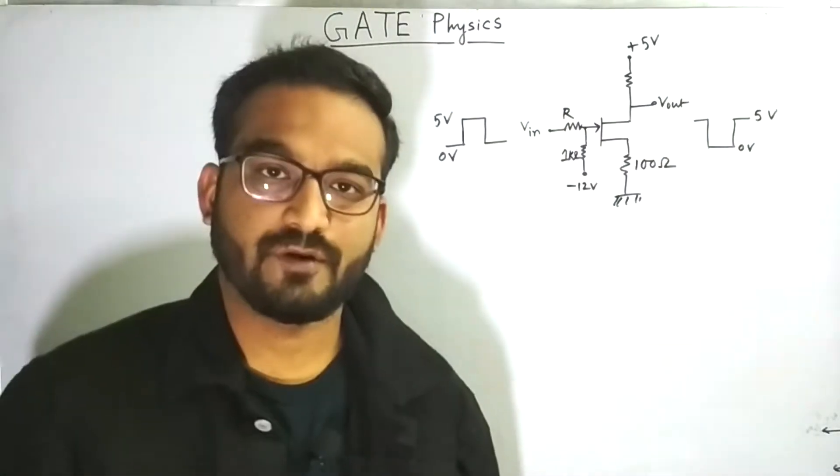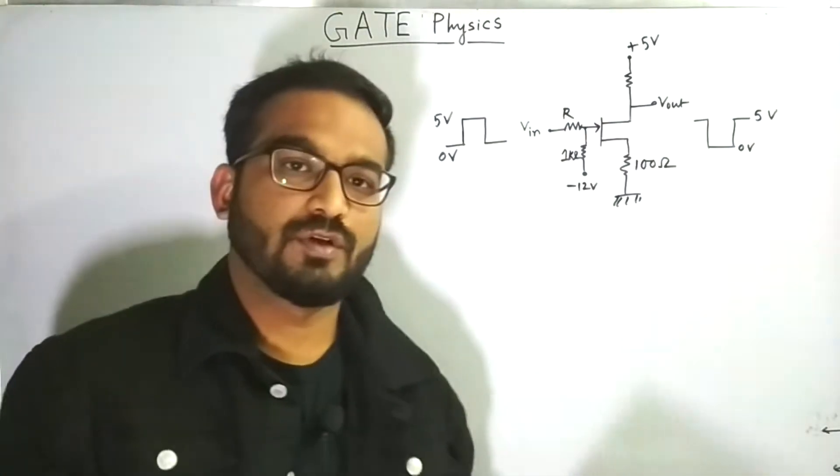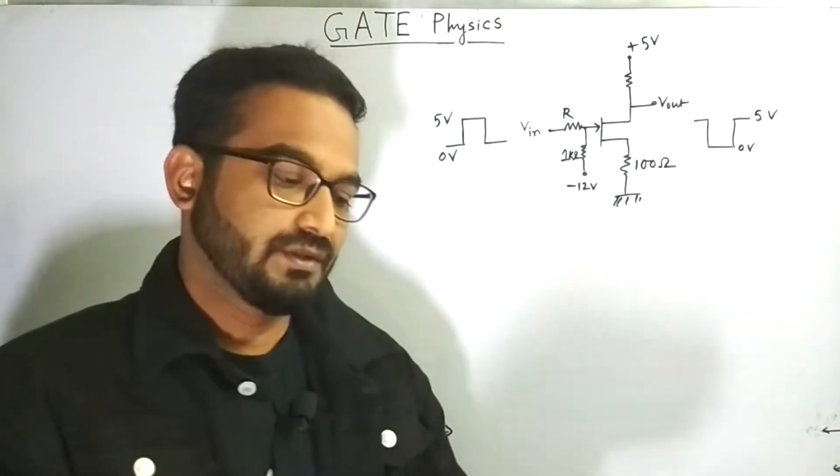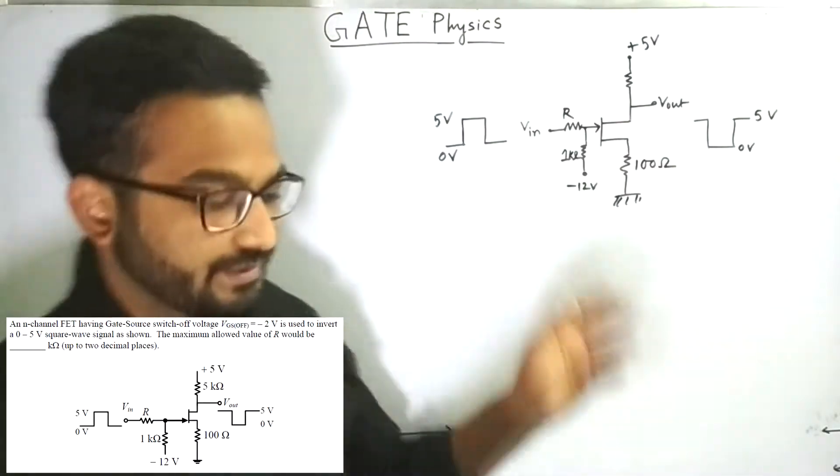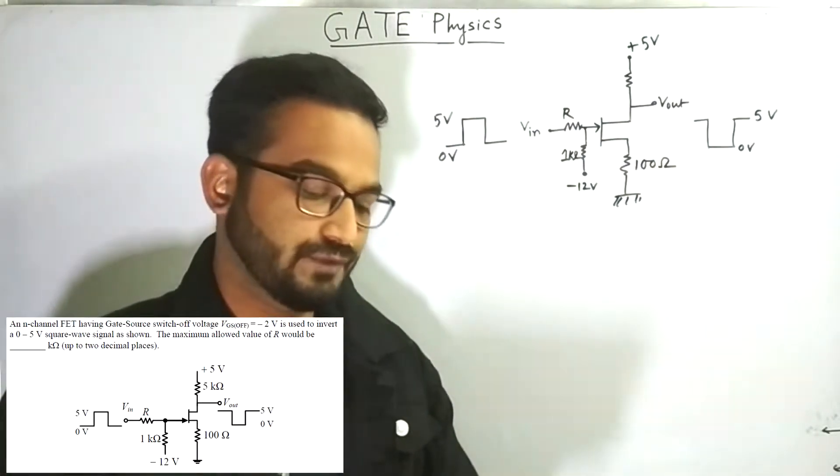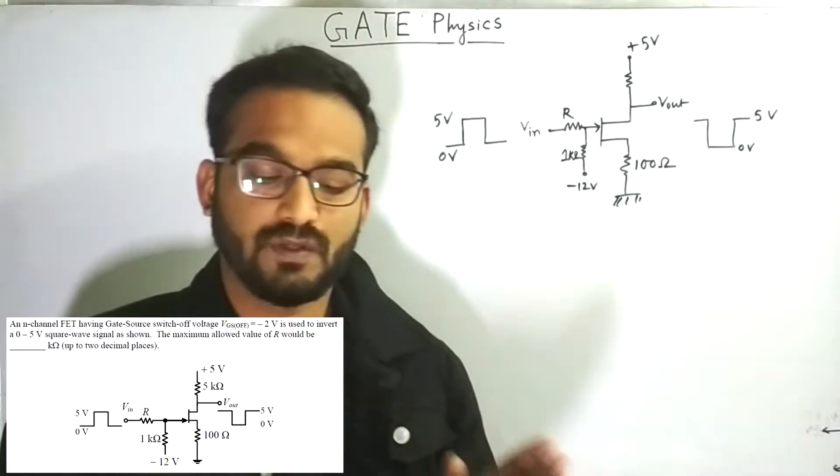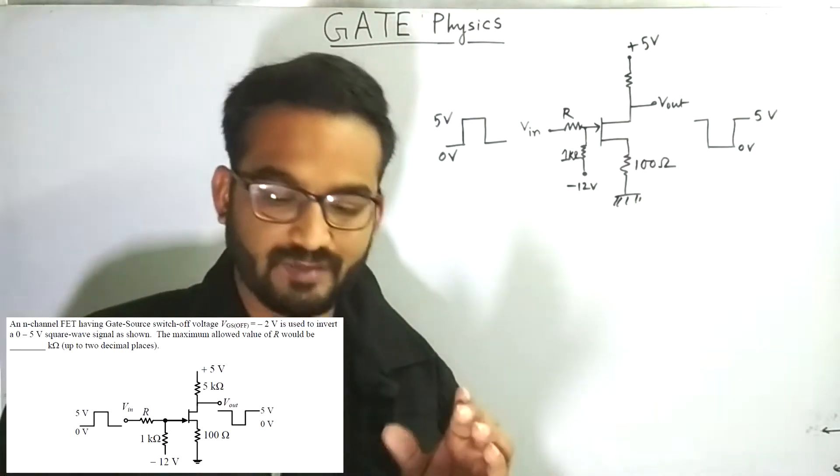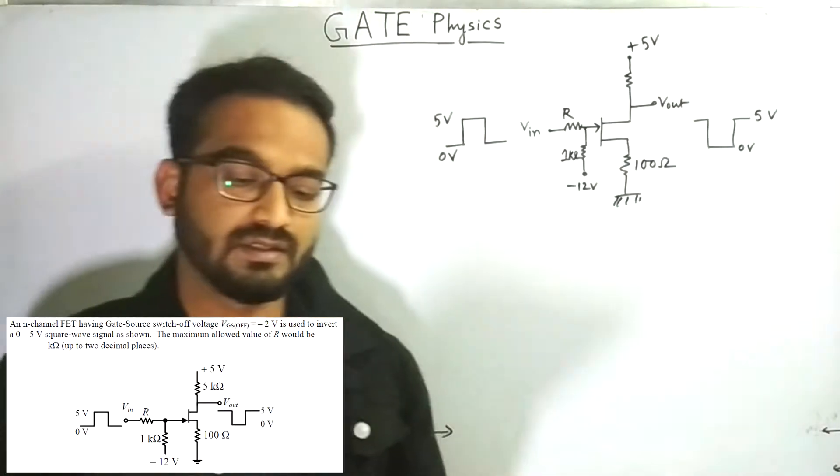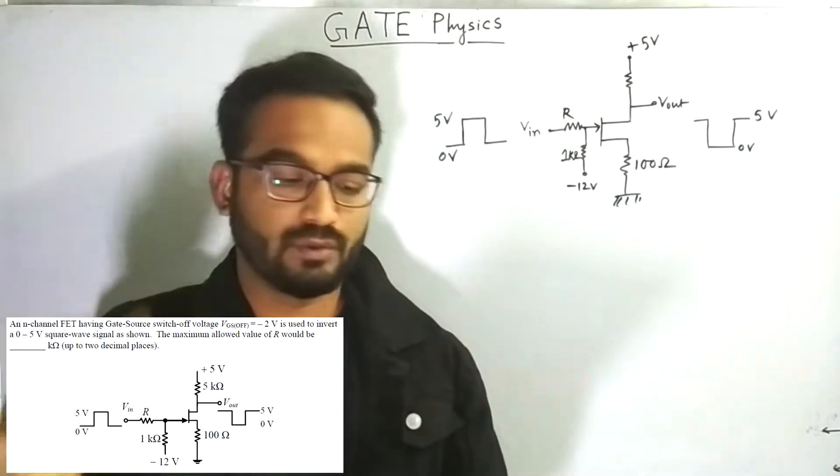Let's discuss a problem from the electronics section. This problem is basically from the FET section. The problem reads: an n-channel FET having gate-source switch-off voltage VGS OFF equals to minus 2 volts is used to invert a 0 to 5 volt square wave signal as shown.